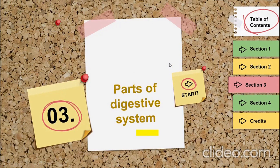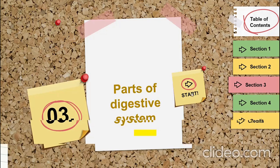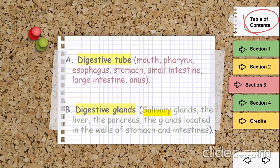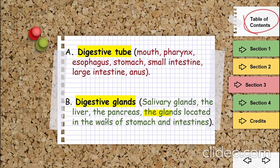Now we will learn about the parts of the digestive system in animals. We can classify the parts of the digestive system in animals into two major categories: the digestive tube and the digestive glands.